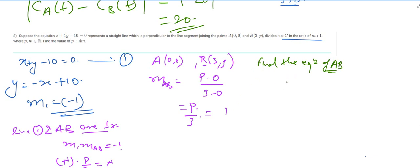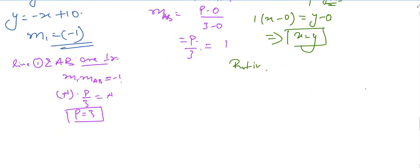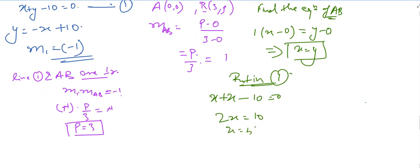Let's find the equation of AB. Using slope-intercept form: y minus 0 equals 1 times (x minus 0), so y equals x. Substituting into equation 1: x plus x minus 10 equals 0, so 2x equals 10, giving x equals 5 and y equals 5. So C has coordinates (5, 5).